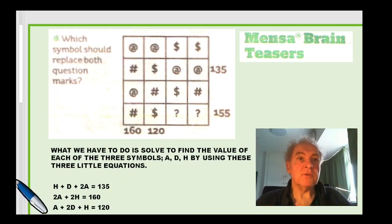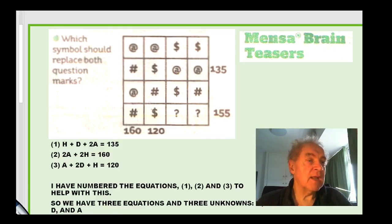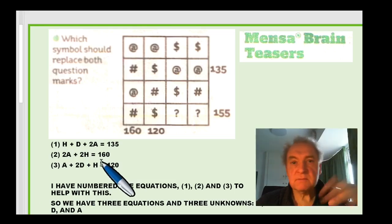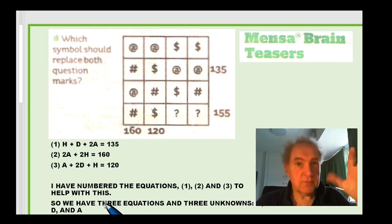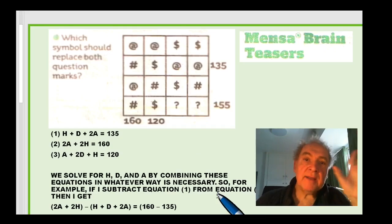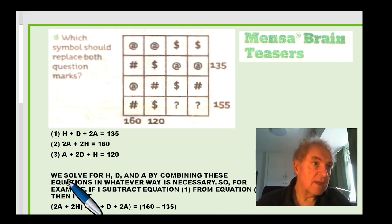So what we have to do is solve for these three little equations. Find out what the values are of a, h, and d. So I'm going to number the equations, because it makes them easy to refer to. So we have three equations and three unknowns. The unknowns are h, d, and a. We combine these equations whatever way is necessary to solve for h, d, and a.